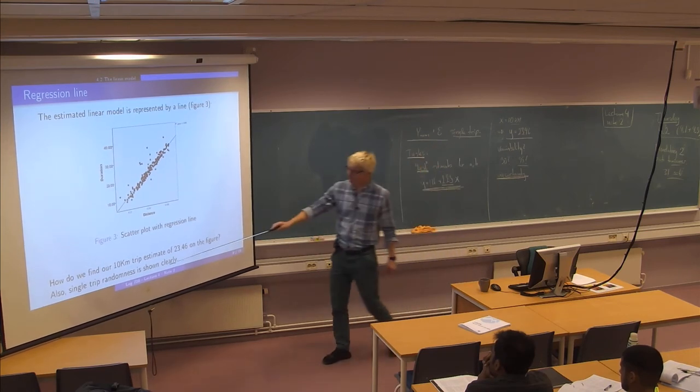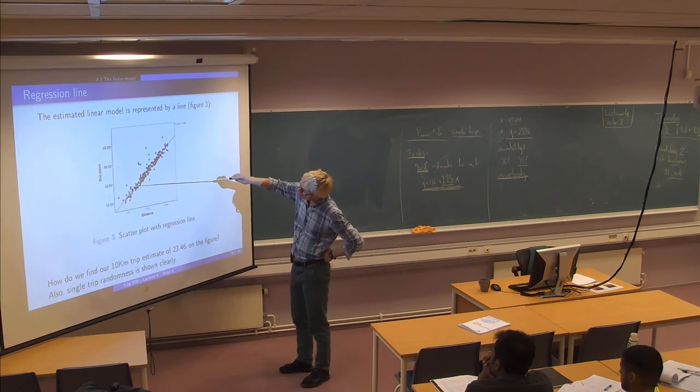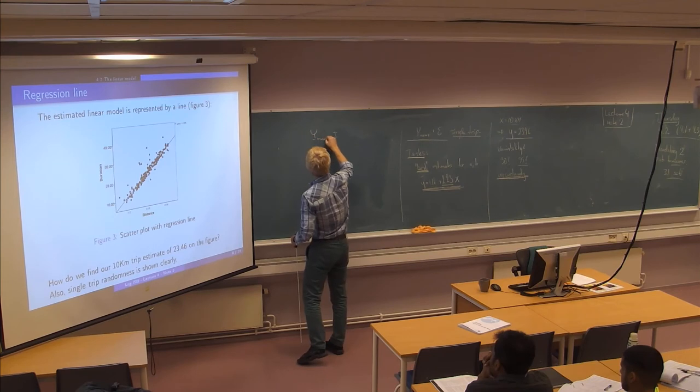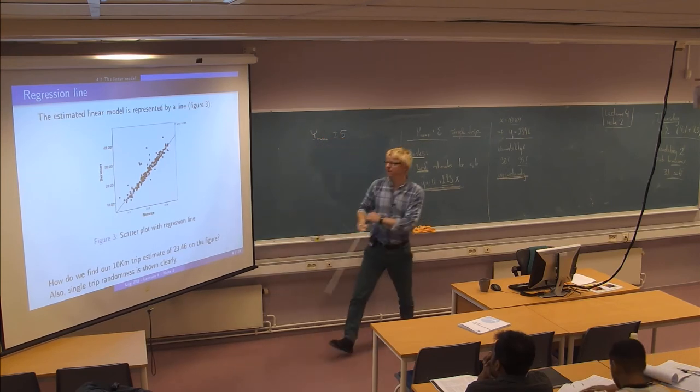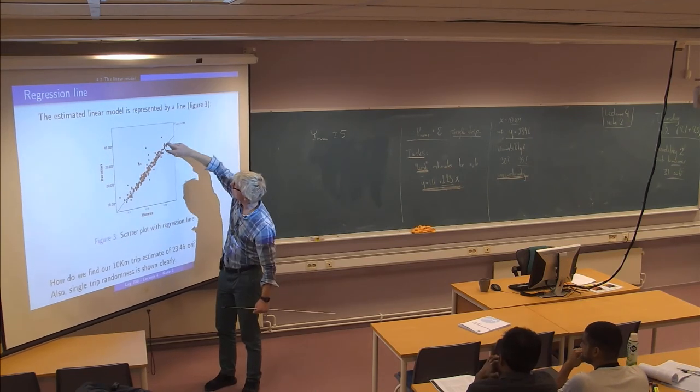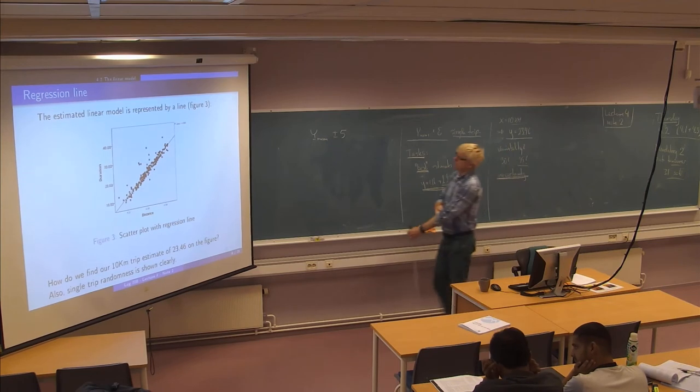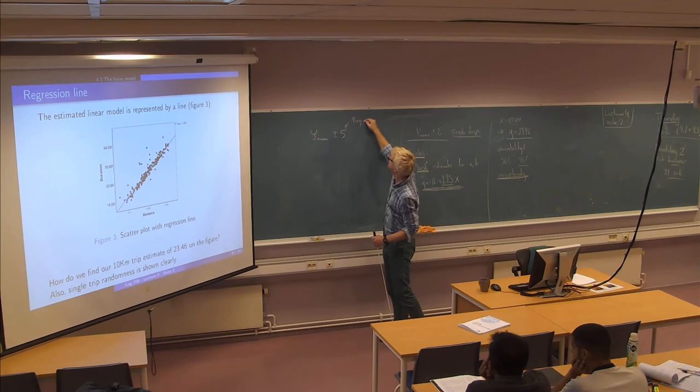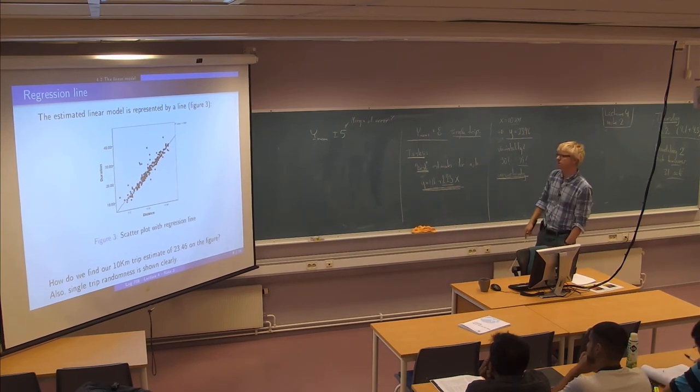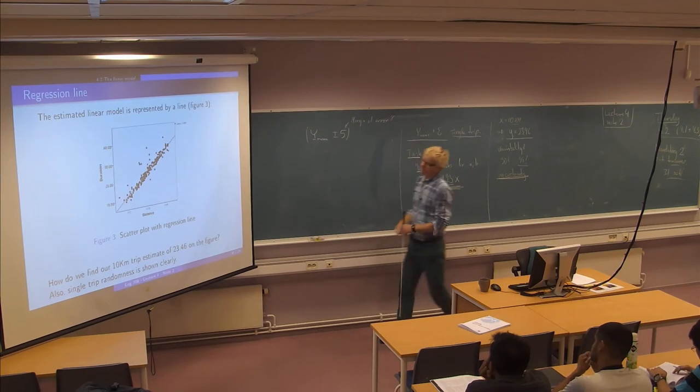And the variability for single trip randomness is very clearly shown here. So you can already guess that if we take something like say y mean plus minus 5 just to shoot from the hip. So 5 is this much and if I go 5 up or 5 down from the mean line I seem to cover almost all the data points. So my first naive guess at the margin of error is something like this, just visually inspecting the thing. Just to make you realize what is a margin of error. So most single trips will be probably within this interval here.